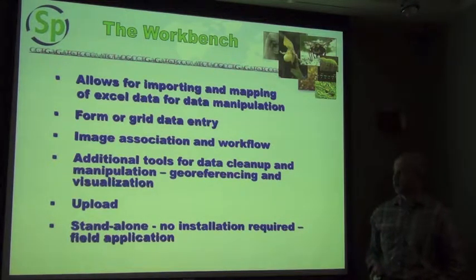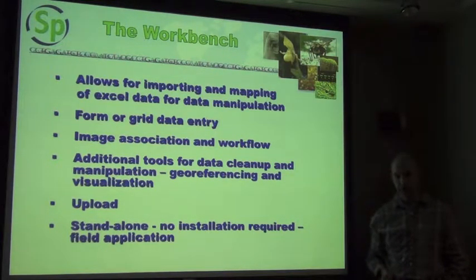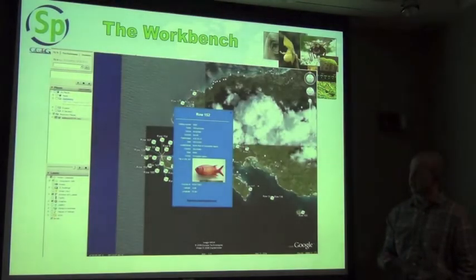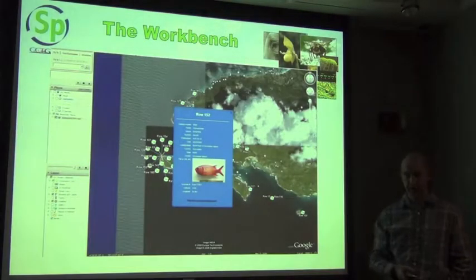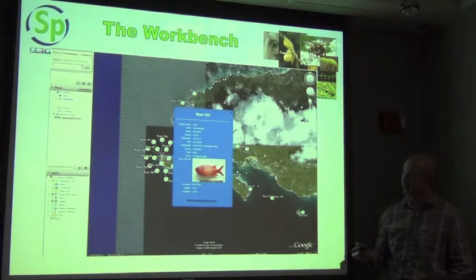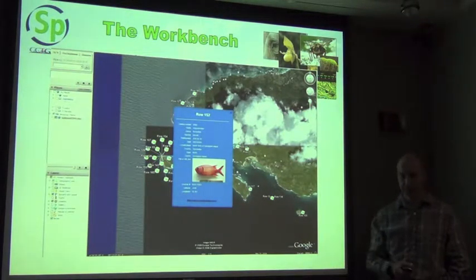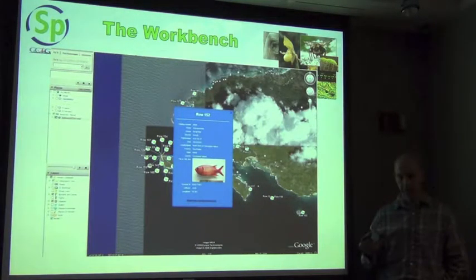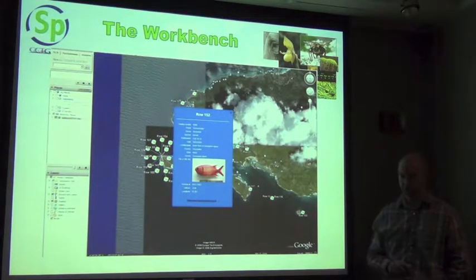One of the tools incorporated into the workbench is a visualization tool using Google Earth, which allows you to visualize your information on a map. It ports a KML file through to Google Earth and allows you to visualize points on a map, click on those points, and get a balloon bubble which incorporates all of the data from the workset and indicates all of the data for that particular point.